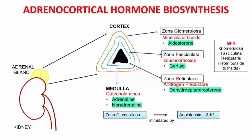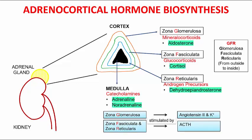It is important to note that the outer zone, zona glomerulosa, is mainly stimulated by angiotensin II and extracellular potassium, while the inner two zones, zona fasciculata and zona reticularis, are mainly stimulated by ACTH — adrenocorticotropic hormone — which is secreted by the anterior pituitary gland and regulates the secretion of adrenocortical hormones.